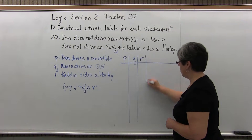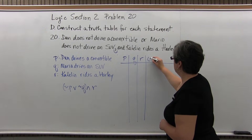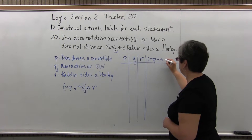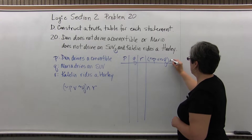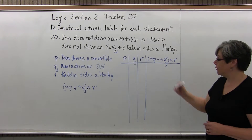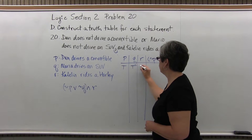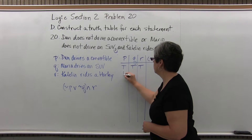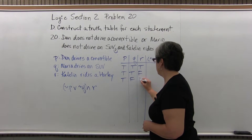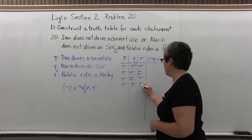Columns for P, Q, R, and for our statement: (negation P or negation Q) and R — remembering to put the parentheses. Now our truth values: true, true, true; true, true, false; true, false, true; true, false, false.